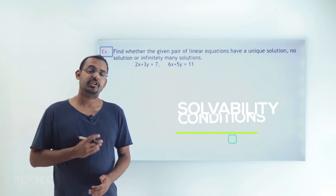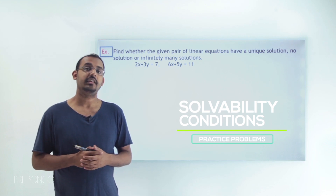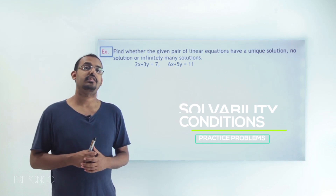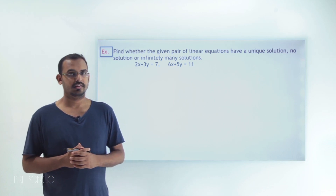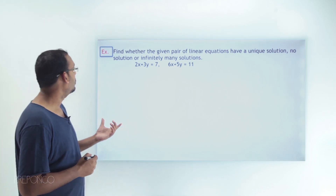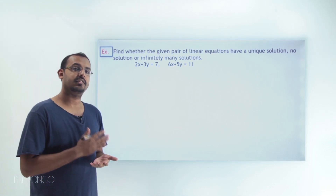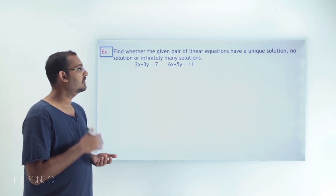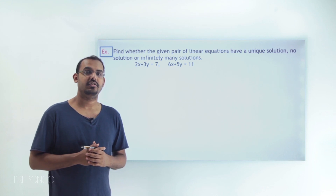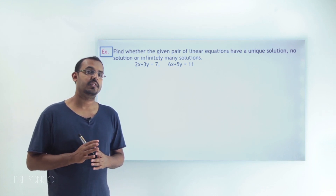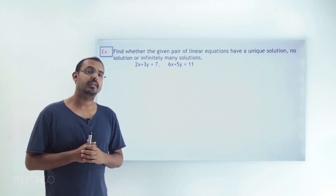Now that we understand the relationship between the coefficients of a pair of linear equations in two variables with the consistency of the system of linear equations, let us go ahead and solve a couple of problems based on those concepts. In this problem we have been given a pair of linear equations and we have to find out if this system has a unique solution, no solution, or infinitely many solutions. Can you recall what the relationships were?